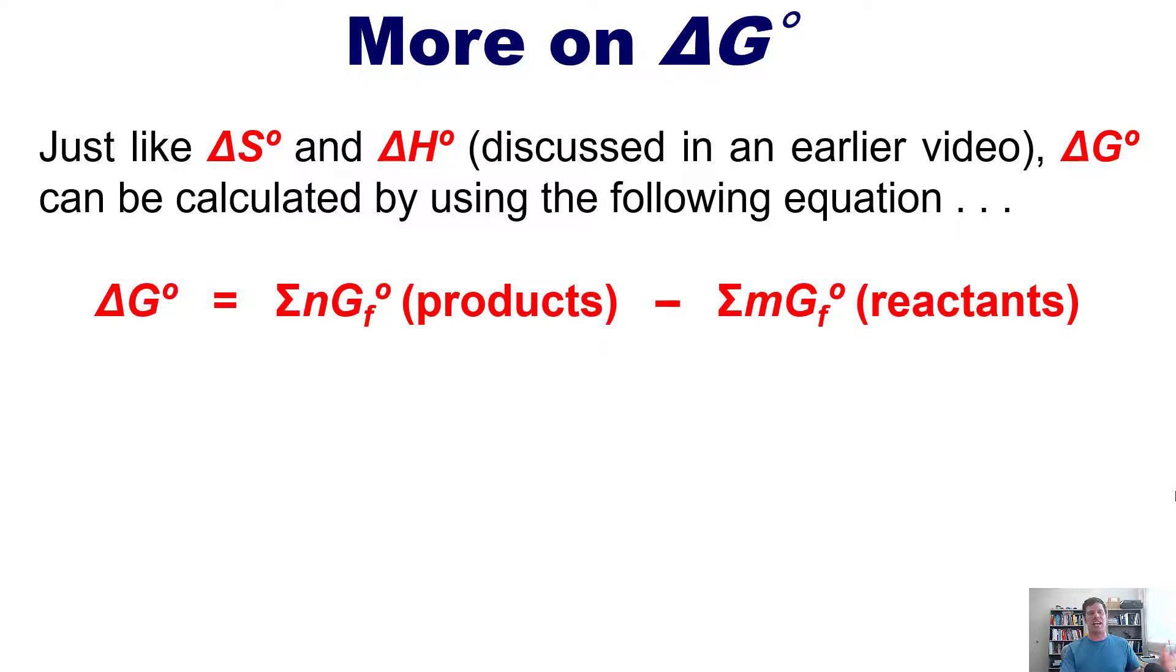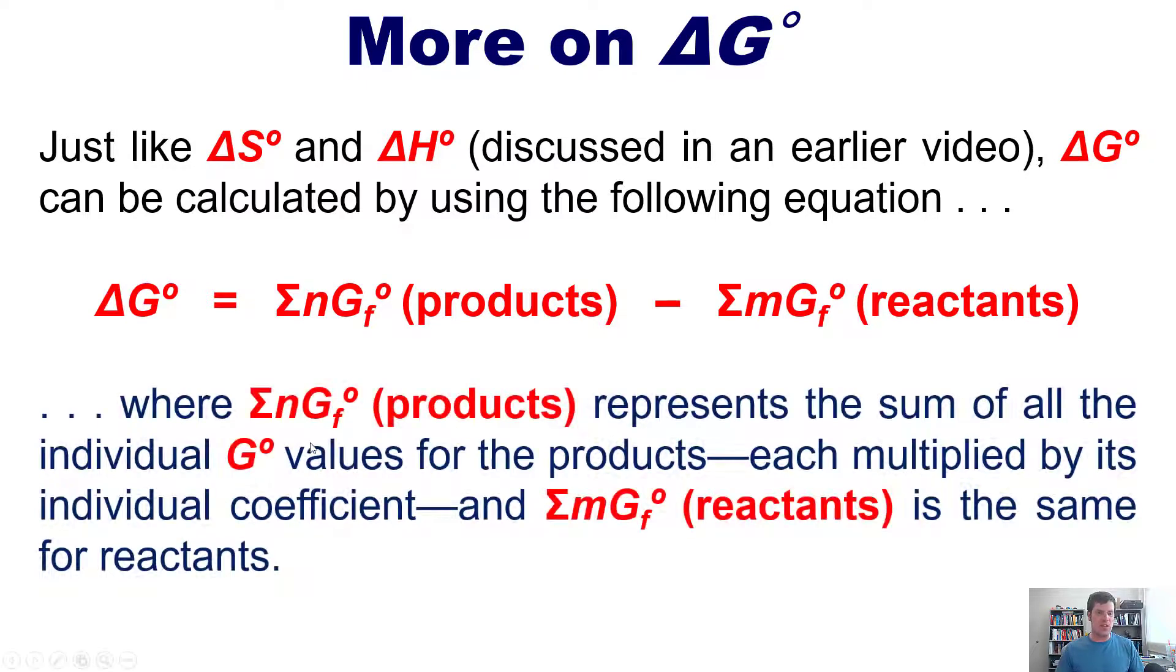It looks very similar to the delta S and delta H equations, where the term right here for product represents the sum of all of the individual G values for the product, each multiplied by its individual coefficient. And this term for reactants is the same, just for reactants. Make sense? Good.